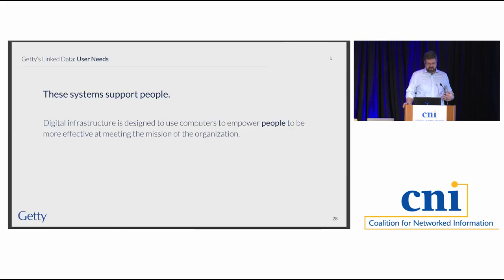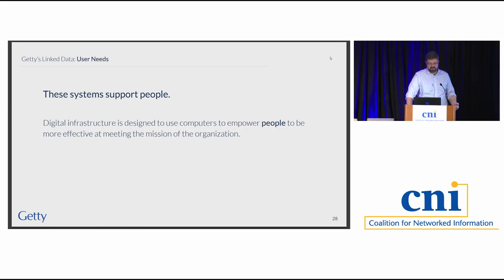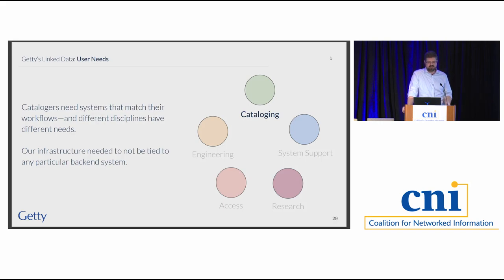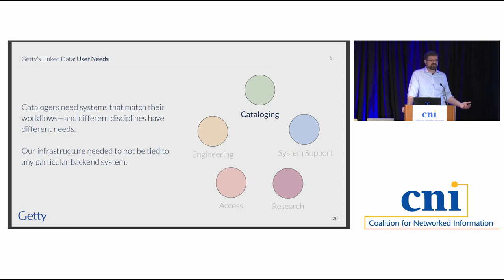We don't build these systems because I like to draw architecture diagrams. We build them because what we really want to do is support people. Digital infrastructure isn't designed to make computers happy — computers are little boxes of silicon that sit under someone's desk. We do it to empower people to be more effective at meeting their mission. We have many different constituents with many different kinds of needs. We have catalogers who need to be productive. They need to do their work. Different disciplines — museum registrars, librarians, archivists, content editors — work really differently and need different systems.